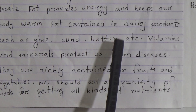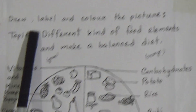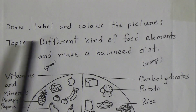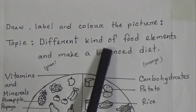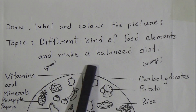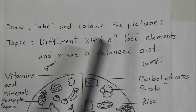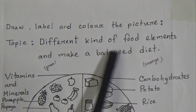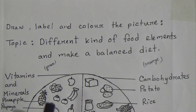I hope all of you have understood. Now we will discuss draw, label, and color the picture. The topic name is 'Different Kinds of Food Elements and Make a Balanced Diet.' I am repeating: the topic name for draw, label, and color the picture is 'Different Kinds of Food Elements and Make a Balanced Diet.'